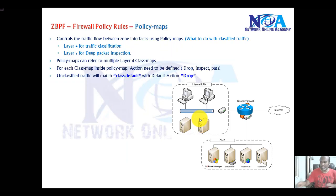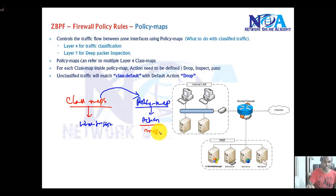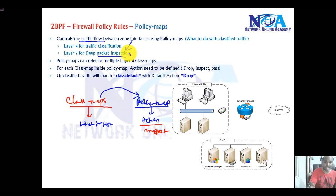These actions are defined using policy maps. Class maps tell the router what traffic to match, while policy maps tell the router what action to take. If you want to define an inspect option, you create a policy map. A policy map controls the flow of traffic between interfaces — whether you want to inspect, pass, or drop. You can use multiple class maps inside a single policy map.